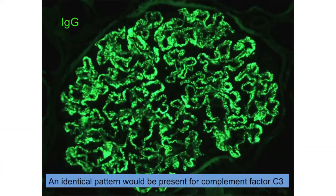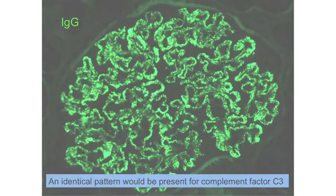The immunofluorescence pattern of membranous nephropathy is pretty typical, as shown by this slide. There is finely granular peripheral capillary wall staining — in this case for IgG, but the staining for complement factor C3 would look identical. If your laboratory does subclass staining, IgG4 tends to be the dominant or codominant isotype in membranous nephropathy. Factors such as C1Q, IgA, or IgM are typically absent or less prominent in primary membranous nephropathy, but if present they may be a clue of secondary membranous nephropathy.